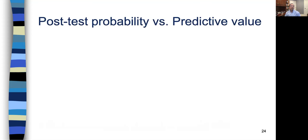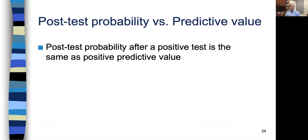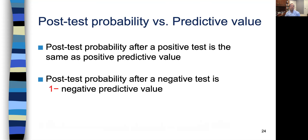More definitions: post-test probability versus predictive value. The post-test probability after a positive test is the same as positive predictive value. But post-test probability is a more general term because not all tests are dichotomous. Post-test probability can exist for any result. The post-test probability after a negative test is one minus negative predictive value — because post-test probability is the chance that they have the disease, while negative predictive value is the chance that they don't.